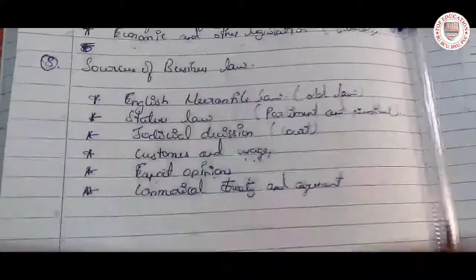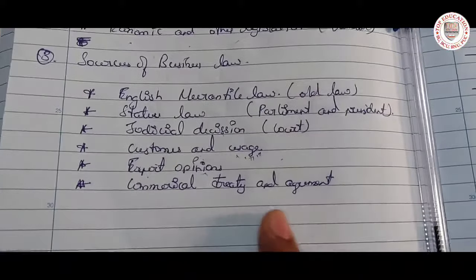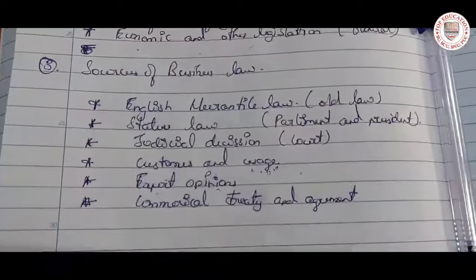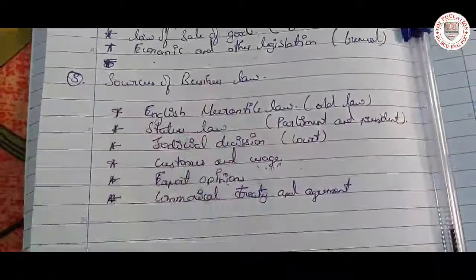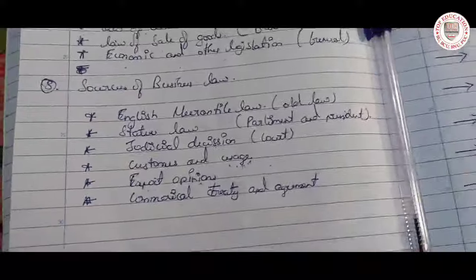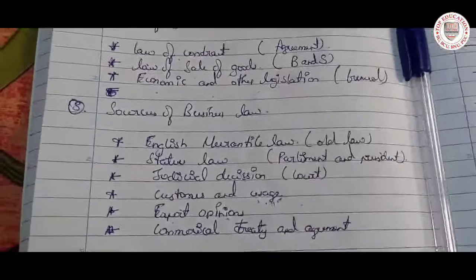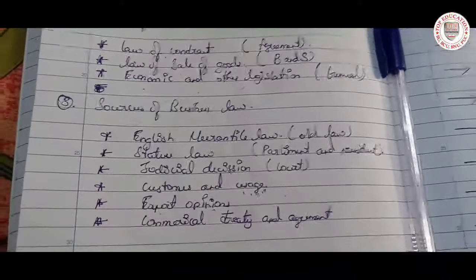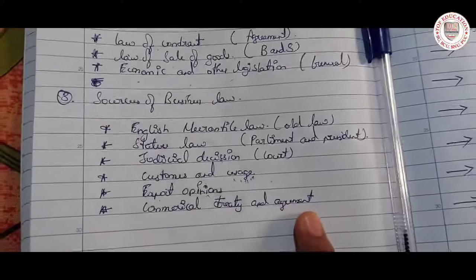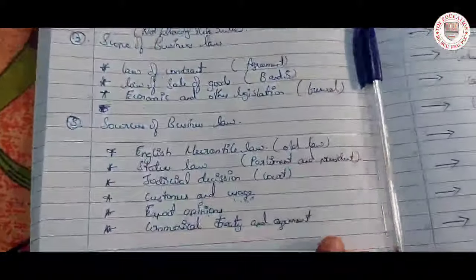Expert opinions — there are some expert persons on the committee who give their opinions. Commercial treaty and agreement — this is like signing documents between two or three persons where they come into an agreement, such as business partnership, joint stock companies, or other arrangements.